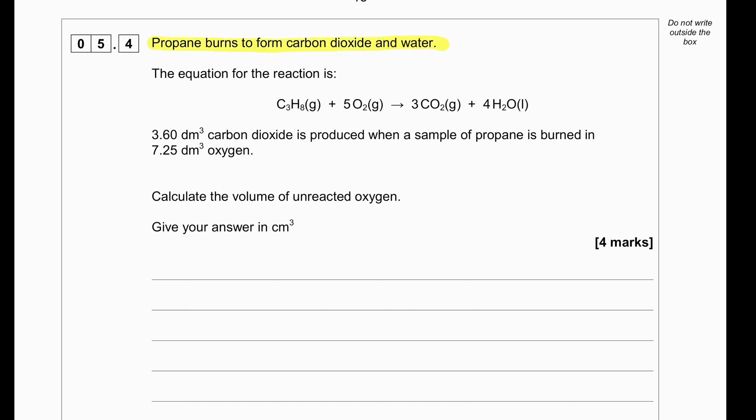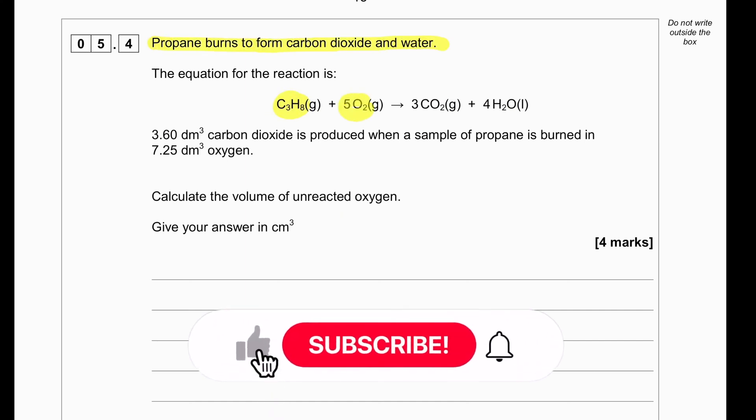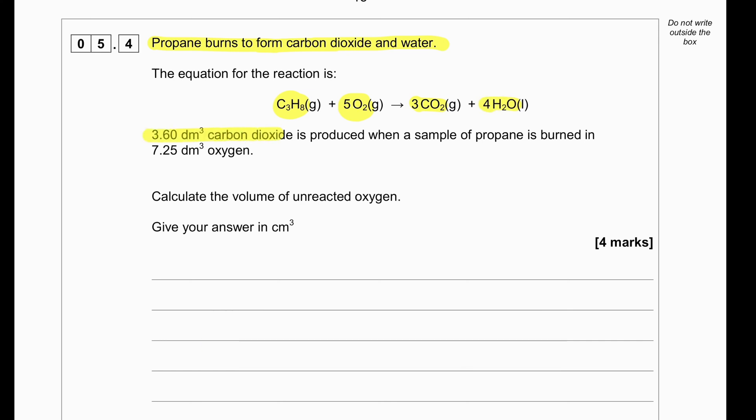Propane burns to form carbon dioxide and water. Propane plus oxygen produces carbon dioxide and water. This is a complete combustion. 3.6 dm³ of carbon dioxide is produced when a sample of propane is burned in 7.25 dm³ of oxygen. Calculate the volume of unreacted oxygen. Give your answer in cm³.